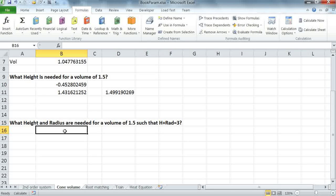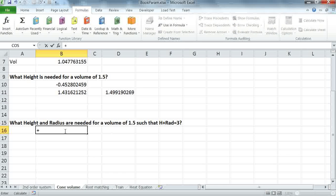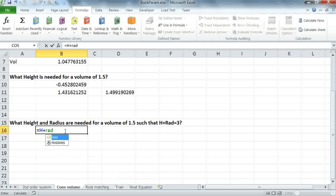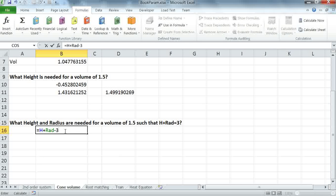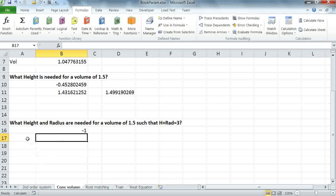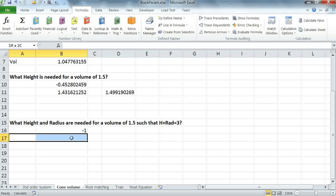So I'm going to insert another constraint, and it's simply now my height plus radius minus 3, because I want to drive this constraint to 0. Next, I'm going to run my nonlinear solver again on these constraints.